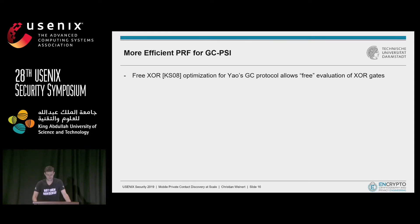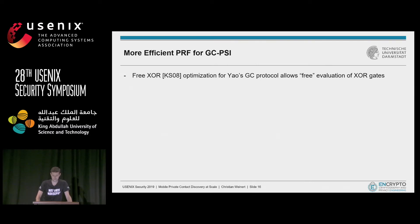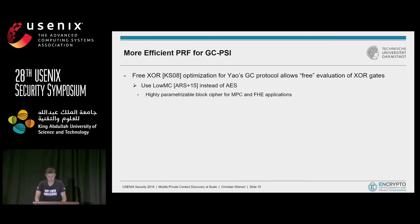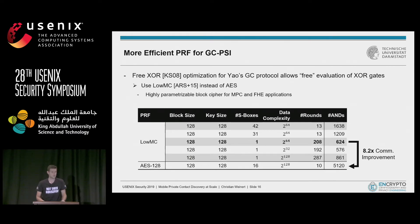In the protocol where the OPRF is implemented with garbled circuits, we replaced AES with a more efficient PRF. With the free-XOR optimization for Yao's GC protocol, the cost metric in circuit design shifted — we now want as few AND gates as possible while XOR gates are essentially free. This is where LowMC comes into play. LowMC is a highly parameterizable block cipher specifically designed for MPC and FHE applications. We tested different parameter sets suitable for the contact discovery use case, all with 128-bit security, and chose a configuration requiring 8.2 times less communication than AES.